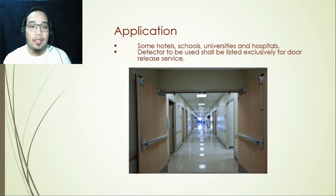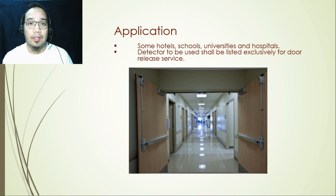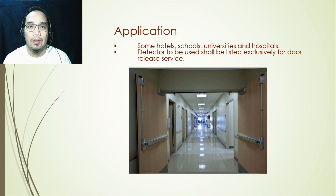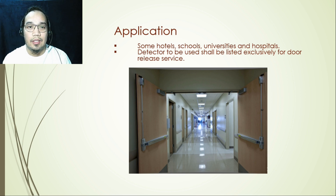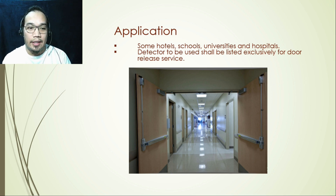There are only some areas where we can apply the placement of smoke detectors for door release. Examples are hotels, schools, universities, and some hospitals where we have fire compartmentation. If we have fire compartmentation and there is a door or opening in that particular wall, then that door shall be fire rated. In some areas, due to the activity inside the building, it is required to maintain this door open — like in a hospital, because if it's closed it will not be easy for employees or patients to move around.